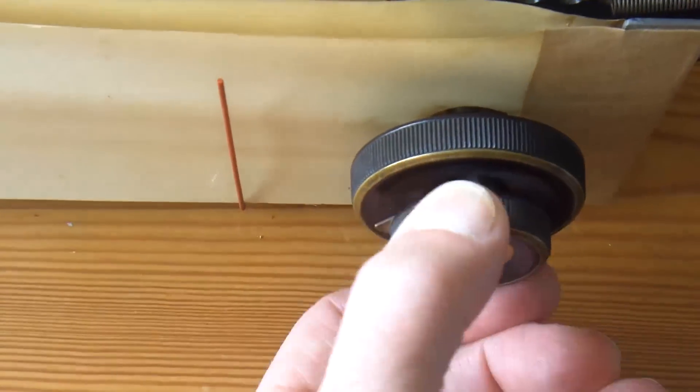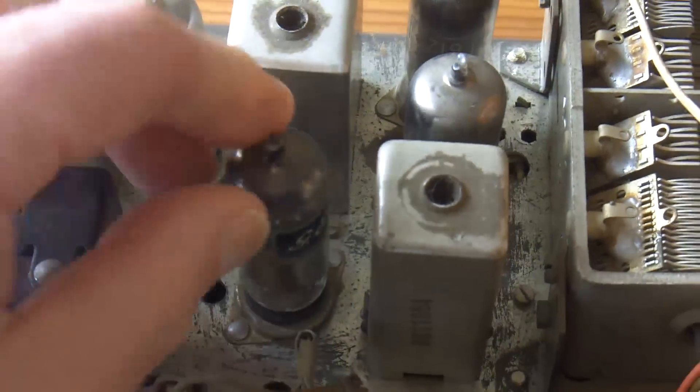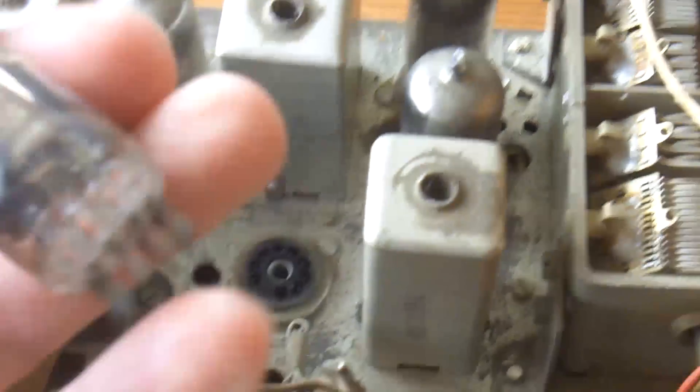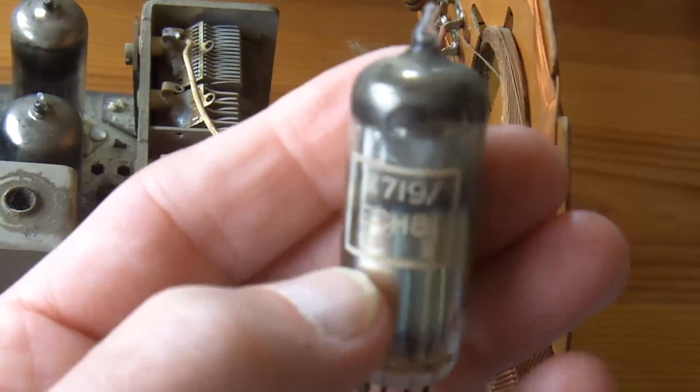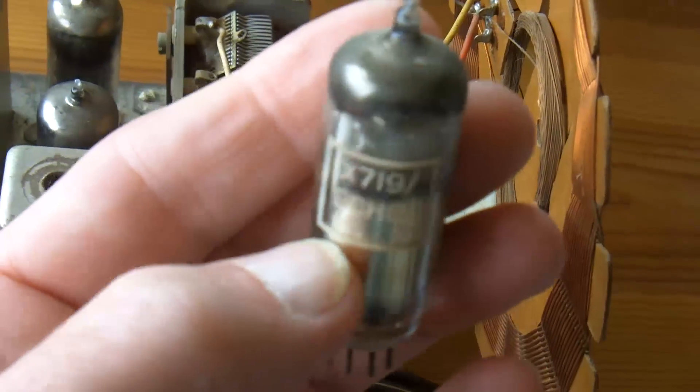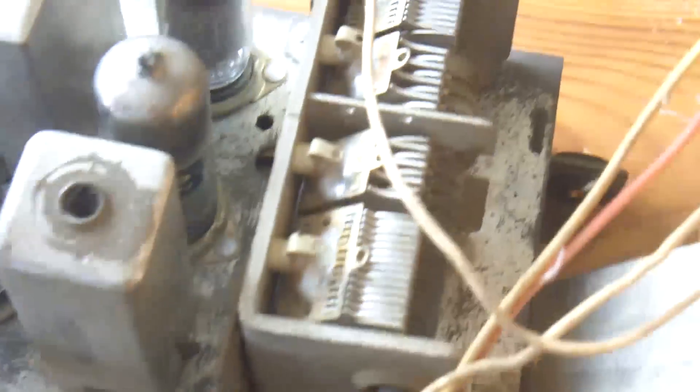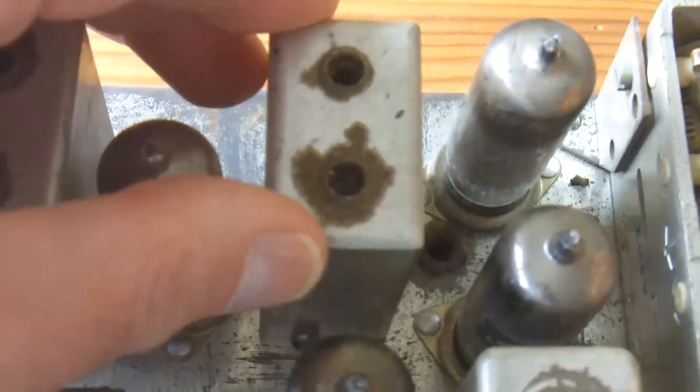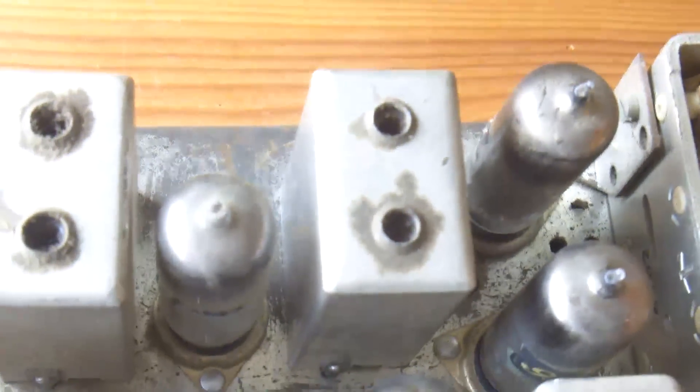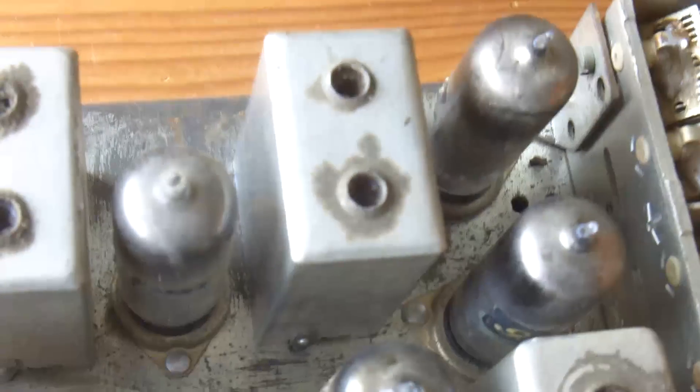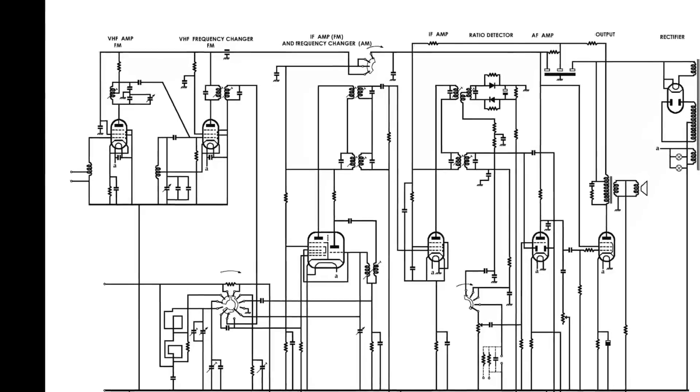The wave change switch of course I've shown you in the previous video. This is V3 and this valve is the intermediate frequency amplifier for the FM band and it's also the frequency changer for the AM bands. This is the little aluminium can that houses the first IF transformer for the AM section and the second IF transformer for the FM section. Now we'll turn back to the circuit diagram.